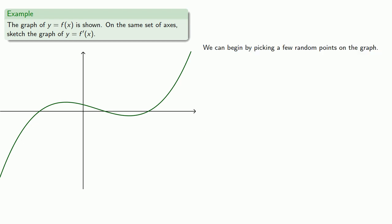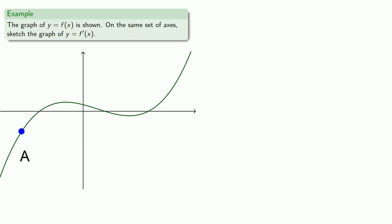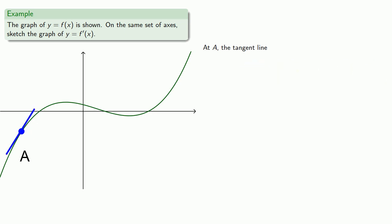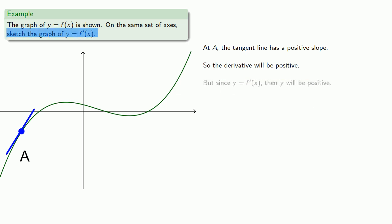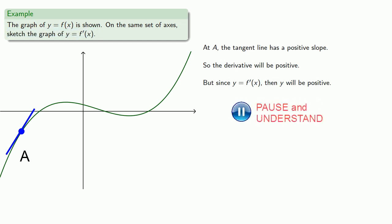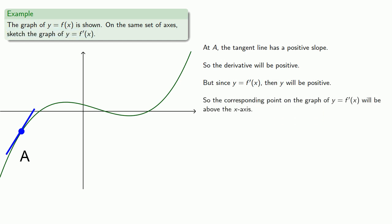We can begin by picking a few random points on the graph, then draw the tangent lines. Let's start with the point a. At a, we'll draw the tangent line, and we see the tangent line has a positive slope. So the derivative will be positive. Since we're graphing y equals f prime of x, then y will be positive, and so the corresponding point on the graph of y equals f prime of x will be above the x-axis.